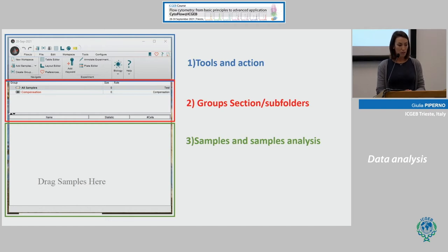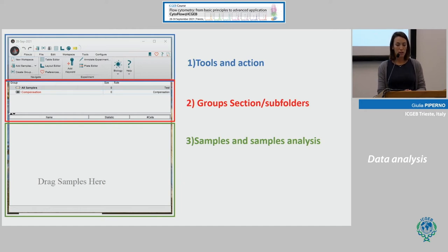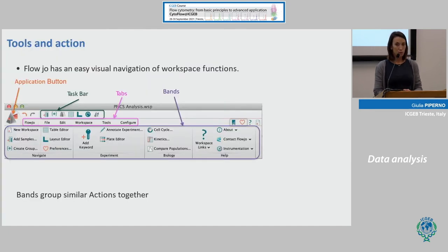The workspace is divided in three sections. The first, upper one is Tools and Action, where you can find different tabs and buttons. The middle one is the Group section with subfolders, where you can organize your groups. The last, lower one is where you put your samples and start to analyze them.